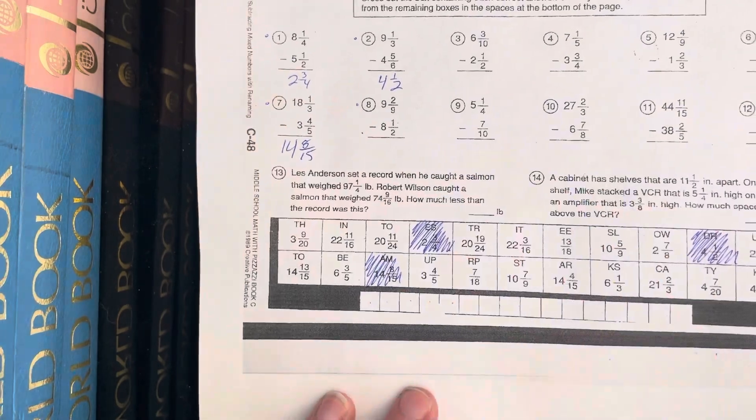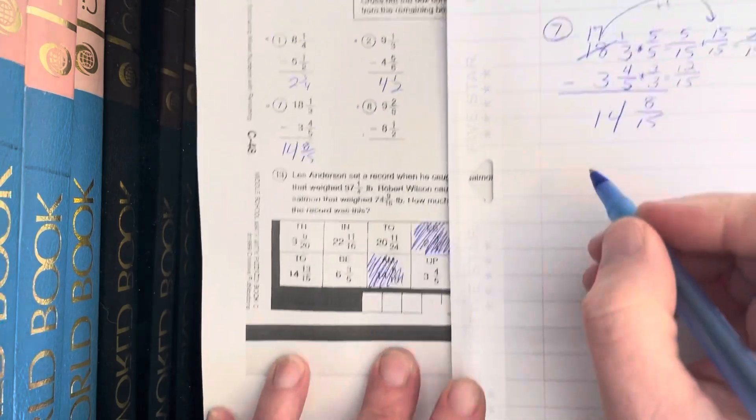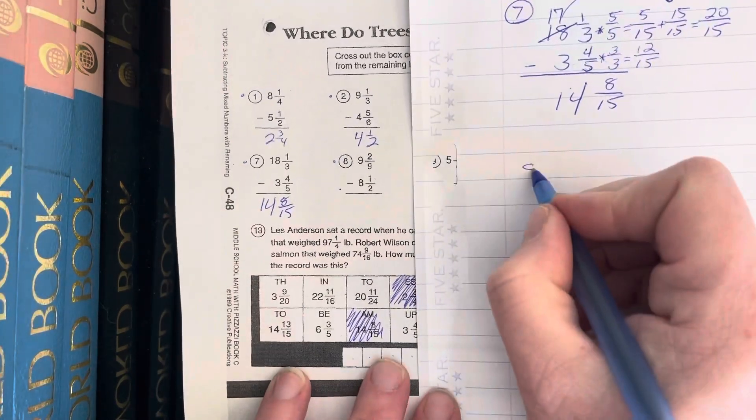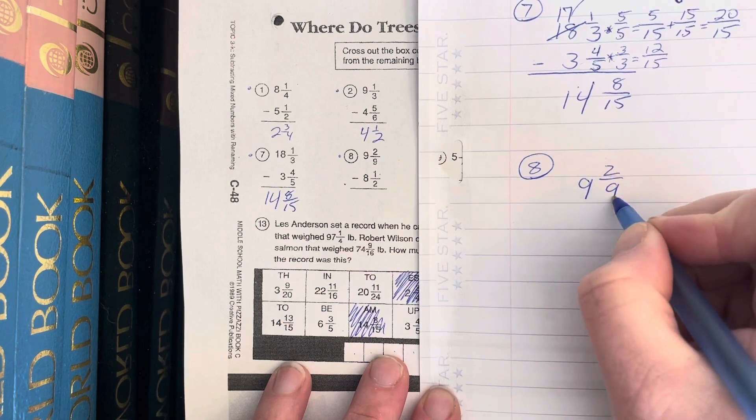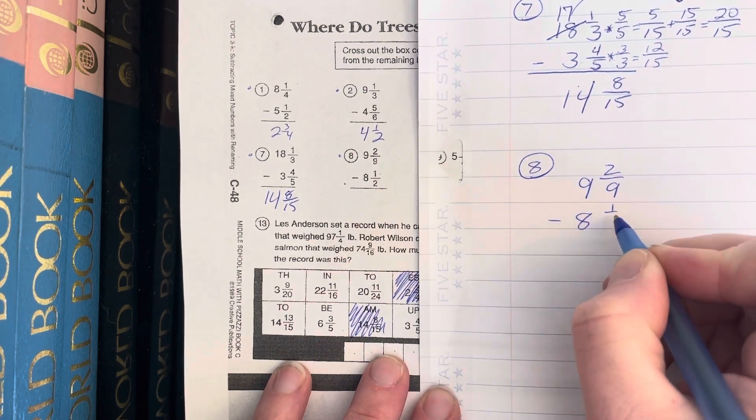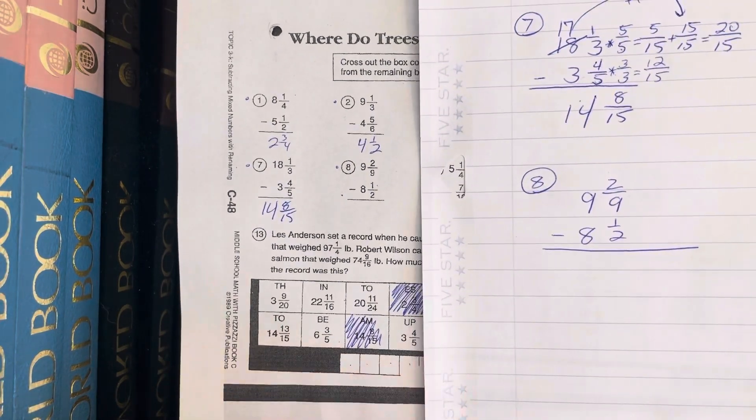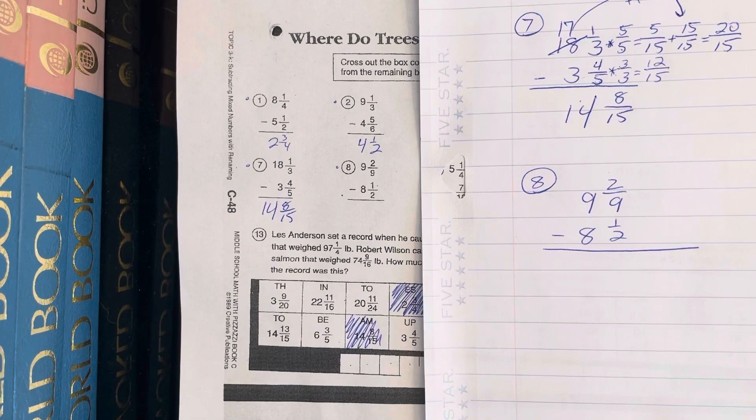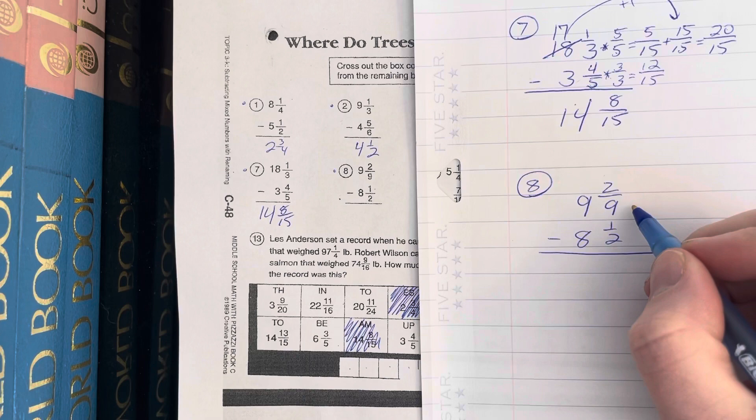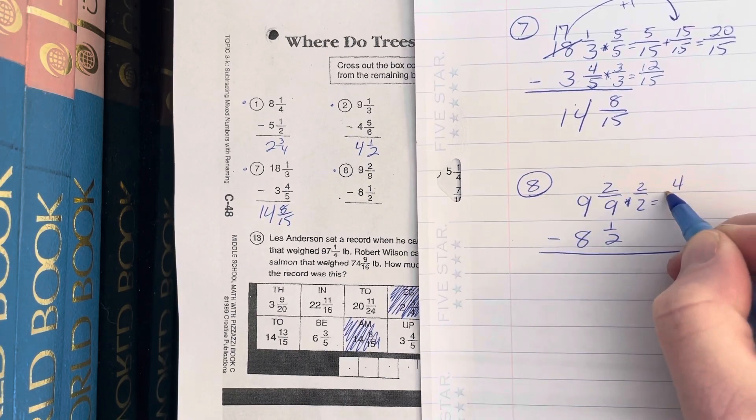Okay, last one that I'm gonna do for you is number eight. I guess I'm gonna come down here and do it so I have enough space. 9 and 2/9 minus 8 and 1/2. Okay, 9 and 2 - different sized pieces, need a common denominator. I guess I'm just gonna have to go with 9 times 2 is 18, because that's the least common denominator. So here I'm gonna multiply by 2/2 and get 4/18.